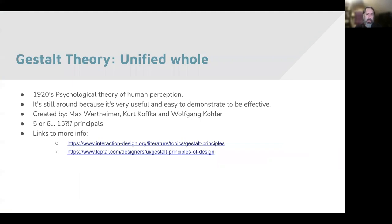So, Gestalt Theory — the unified whole. Gestalt Theory is a 1920s psychological theory about human perception. It's interesting that it's from the 1920s but still something we talk about today, because it's pretty useful and easy to demonstrate how effective it is — we can show that it's real. It was created by Max Wertheimer, Kurt Koffka, and Wolfgang Köhler. There were initially five or six principles, but some places now list as many as 15. The links below point to a couple of those lists, and I recommend looking through the extended list — there are a bunch of cool images where you're like, 'oh, I guess we do work that way in our brains.' Take a look at those, but we'll walk through a few now.